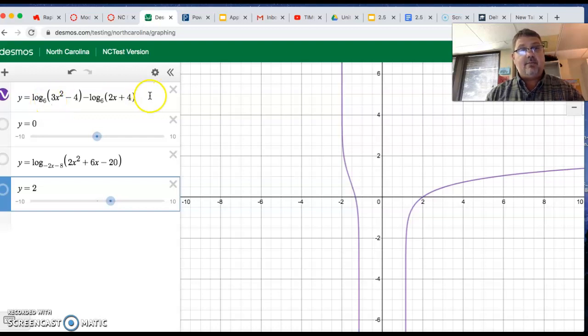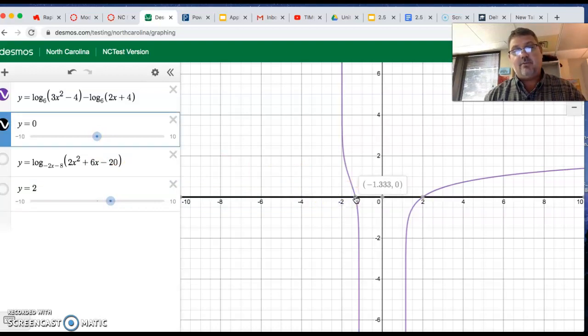And then, remember it's equal to zero, so I graphed y equals zero, which is the x-axis anyway, but there's your negative 1.333, that is your four-thirds, your negative four-thirds, and there's that two.